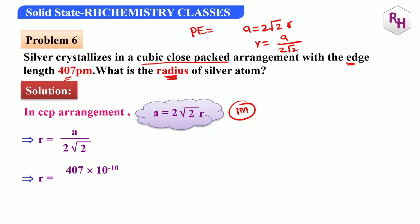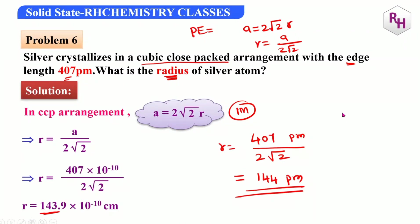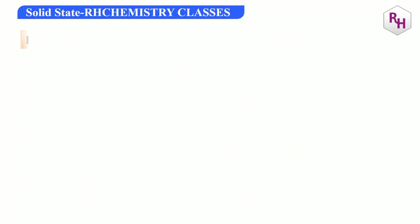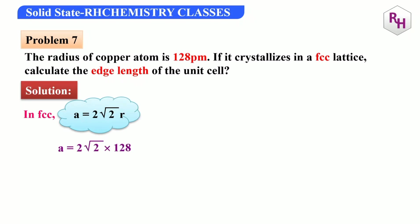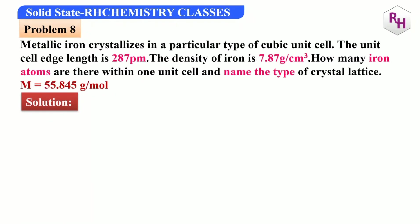Using r = a/(2√2) with a = 407 pm gives r = 144 pm, approximately 361.98 pm for another problem. This formula is worth one mark.